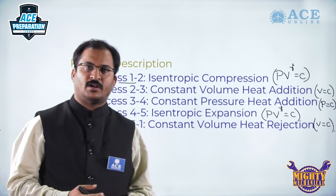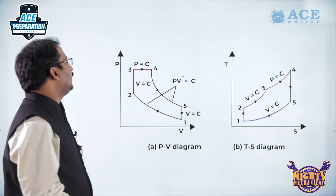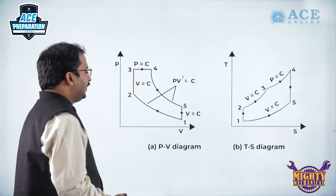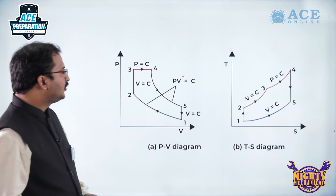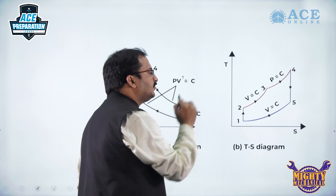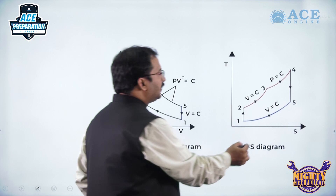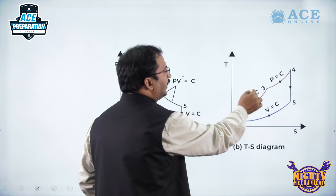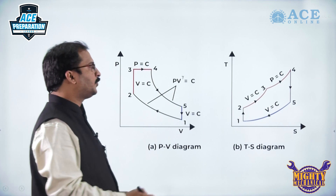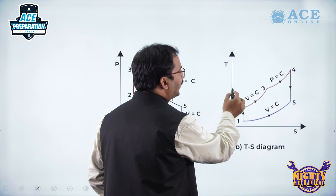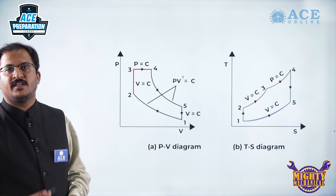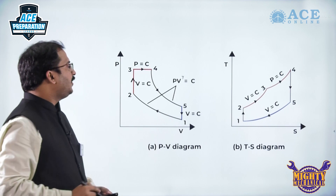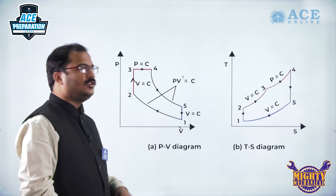Let us see the PV and TS diagrams to understand better about this cycle. Process 1 to 2 is isentropic compression — volume decreases and pressure increases during compression, temperature increases with the increase in pressure, and entropy remains constant. Process 2 to 3 is a constant volume process and is represented as a vertical line pointing upwards; heat addition takes place and temperature and entropy both increase.